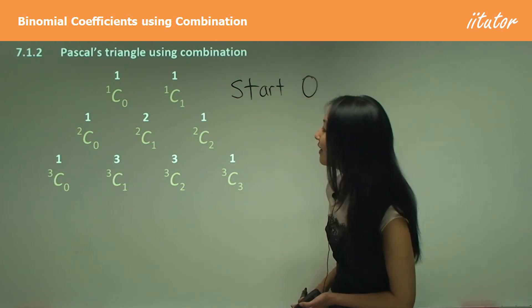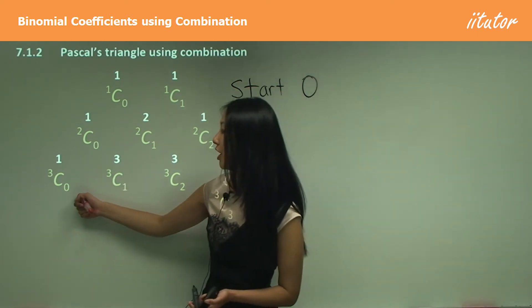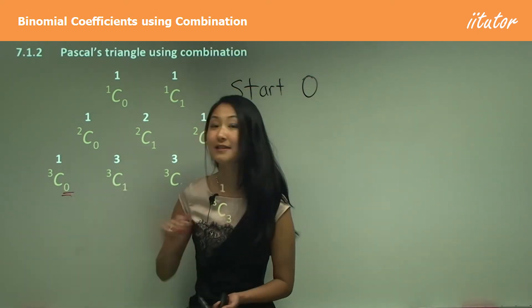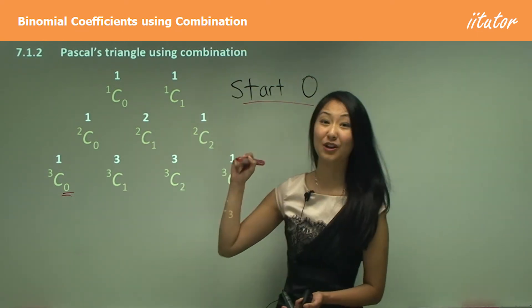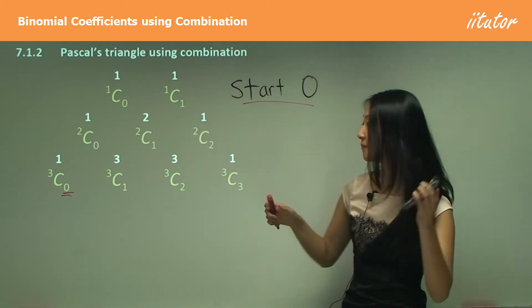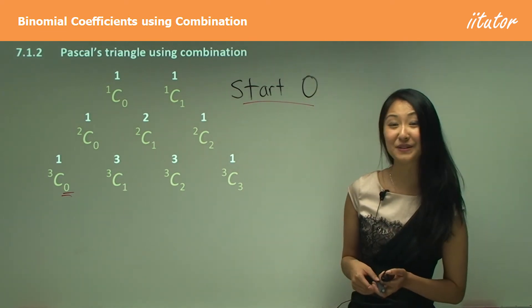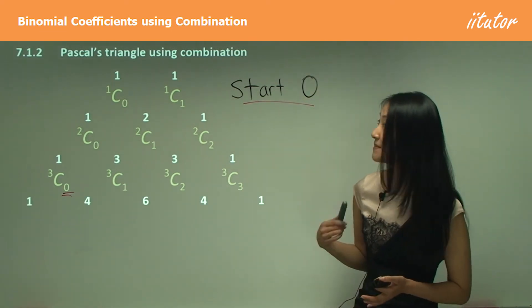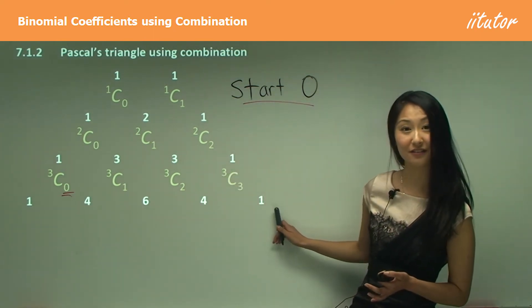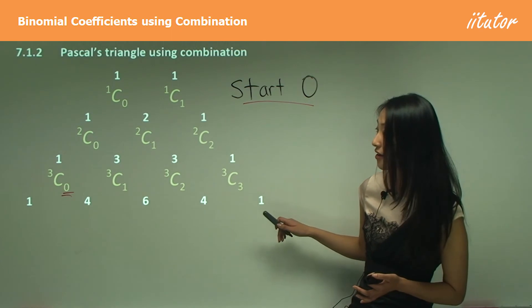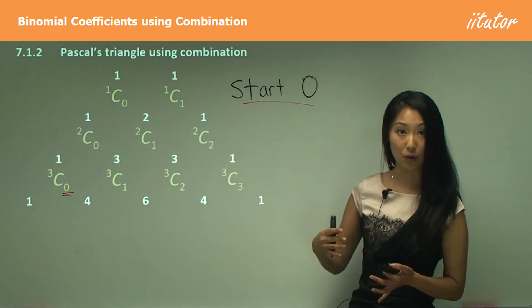And you can kind of see that although this is the first term, it's always starting off with 0 there. So just remember that we're starting with 0 even though we call it technically the first term. Let's try and use combination to get the same numbers as we would by just writing out the Pascal's triangle for that.